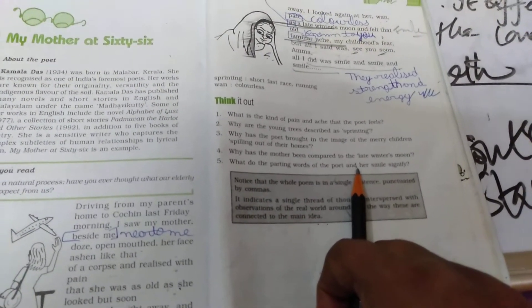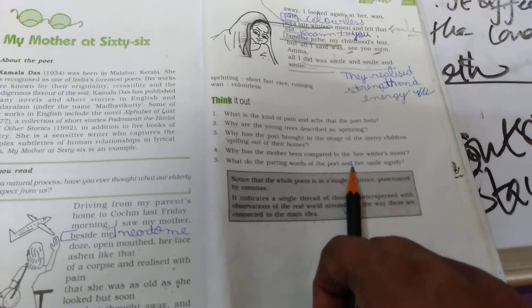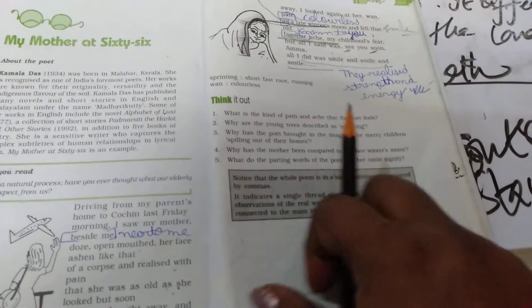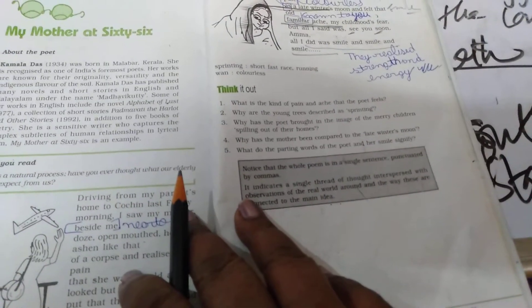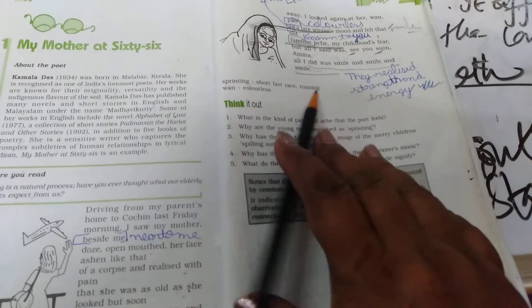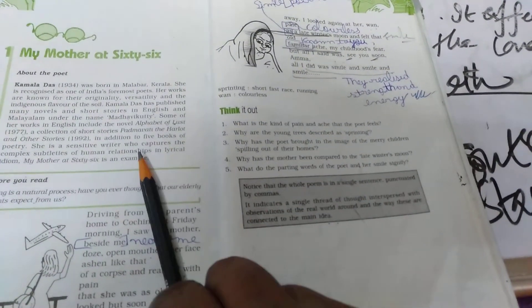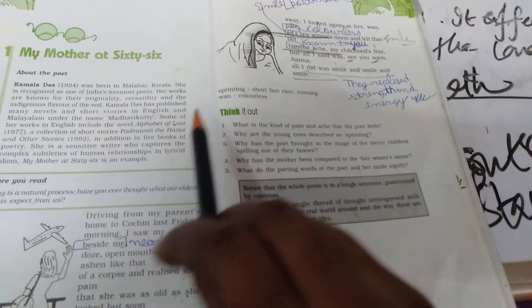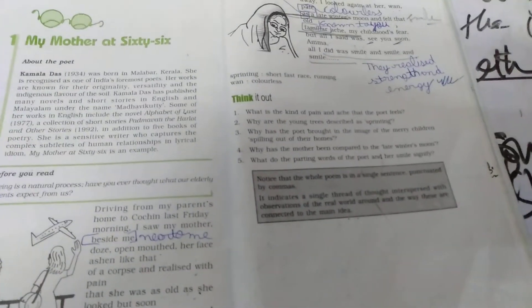She is very weak, very pale. She is wrinkled. She is looking like a dead body. She is almost unconscious and she is going to die very soon. But she resigned herself. She resigned her will to God and she has accepted this reality of life.